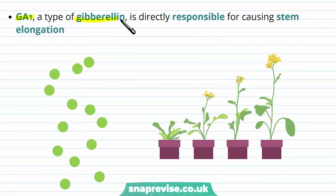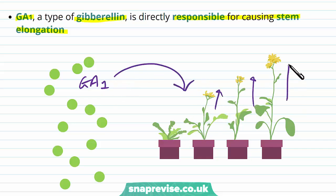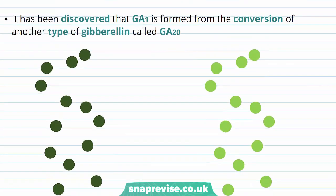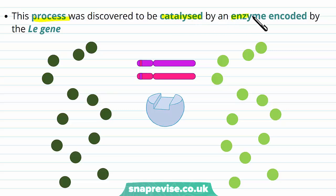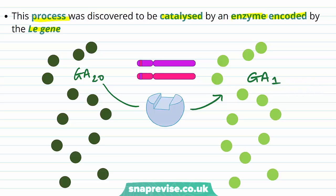GA1 is a type of gibberellin directly responsible for causing stem elongation. It has more recently been discovered that the GA1 molecule is formed from the conversion of another type of gibberellin known as GA20. So GA20 is the original form, which gets converted in a process to the GA1 molecule. This conversion was discovered to be catalyzed by a particular enzyme encoded by the LE gene. So GA20 is converted to GA1, which then causes stem elongation, and this conversion is catalyzed by the enzyme coded for by the LE gene.